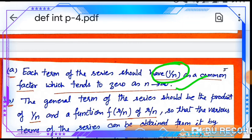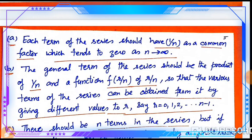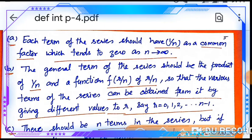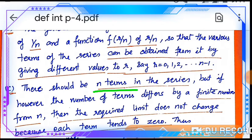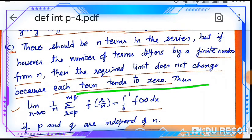Next, the general term of the series should be a product of 1/n and a function f(r/n), so that various terms of the series can be obtained by giving r the values 0, 1, 2, up to n−1. There should be n terms in the series. However, if the number of terms differs by a finite number from n, the required limit doesn't change — limit पर कोई फर्क नहीं पड़ेगा, क्योंकि हर term tends to 0 है।